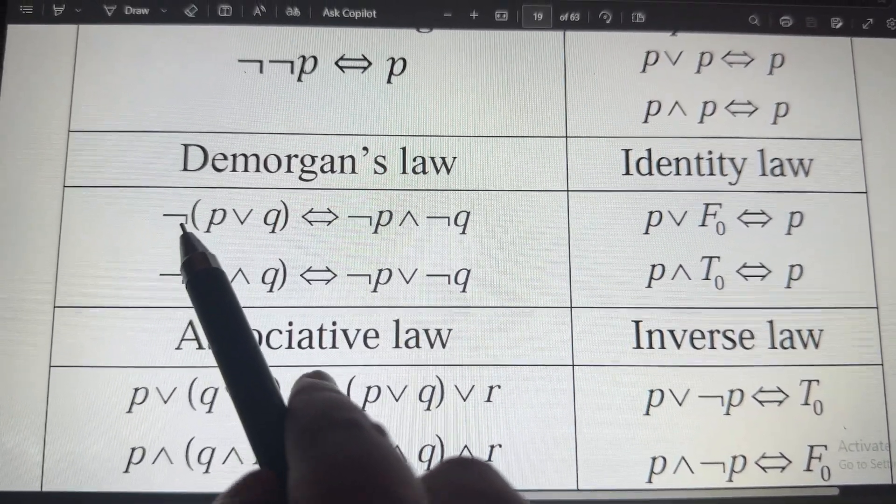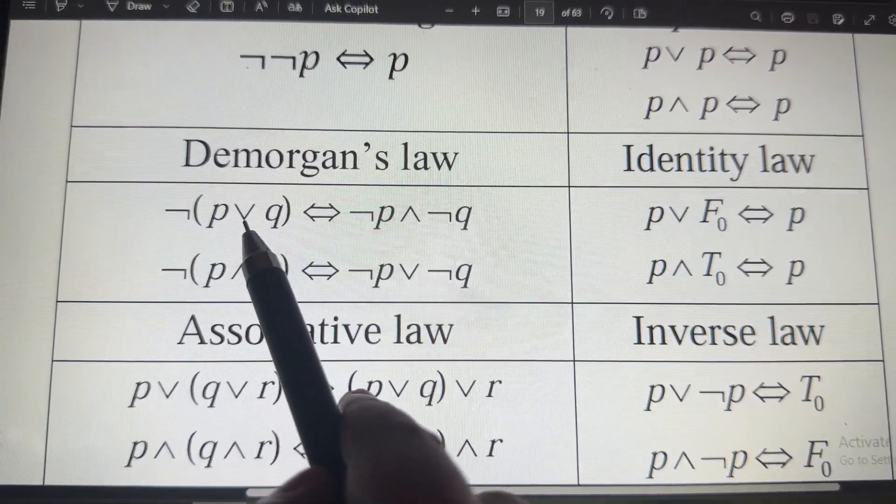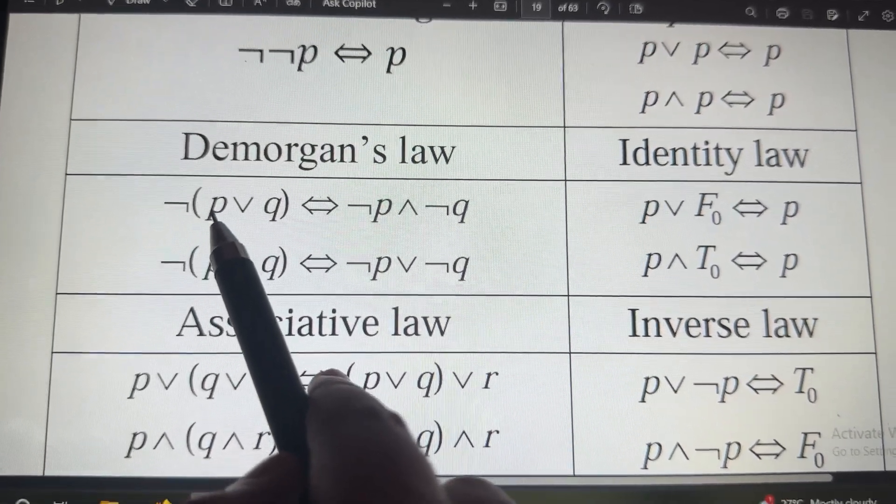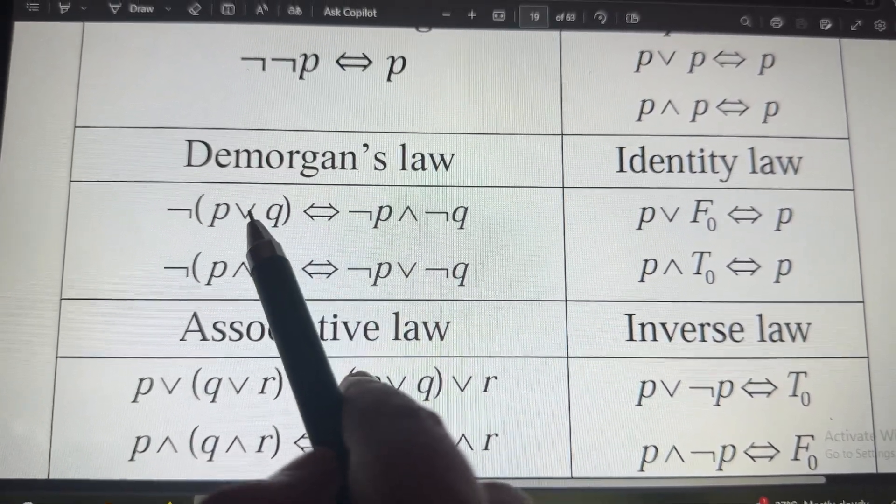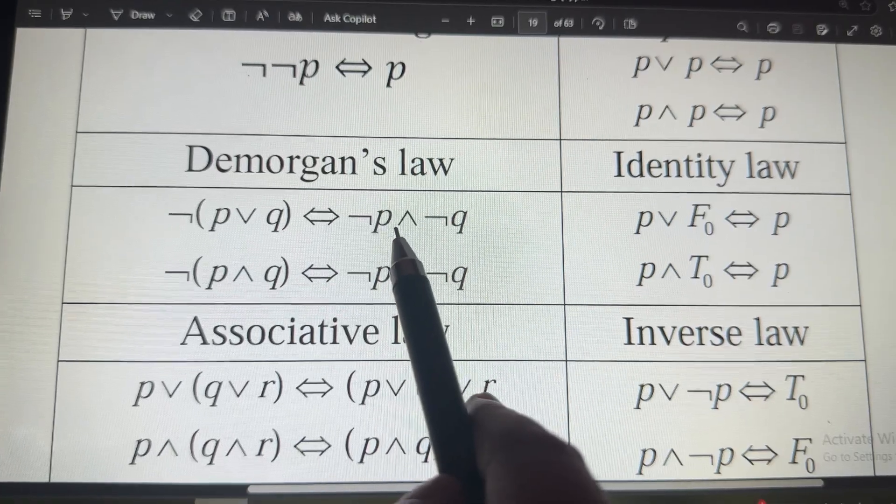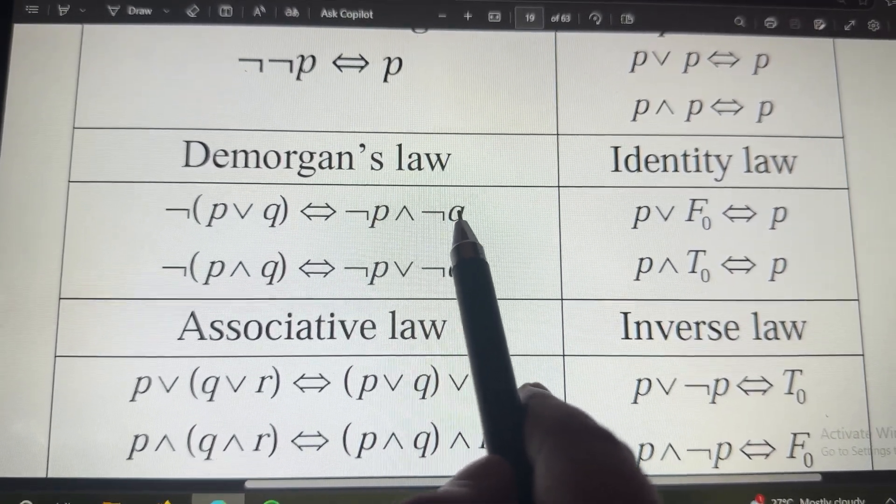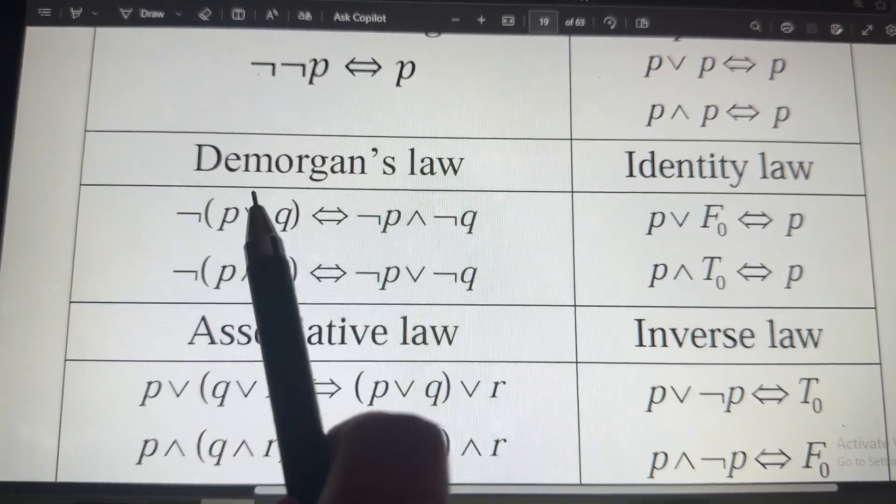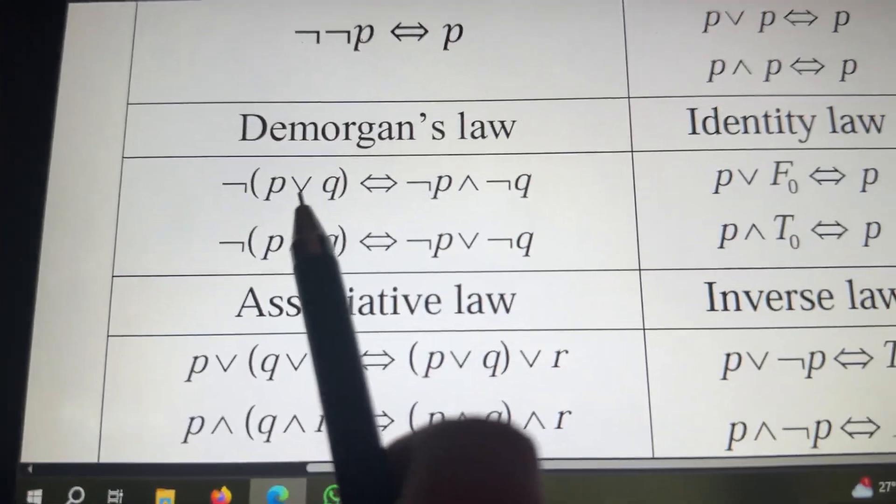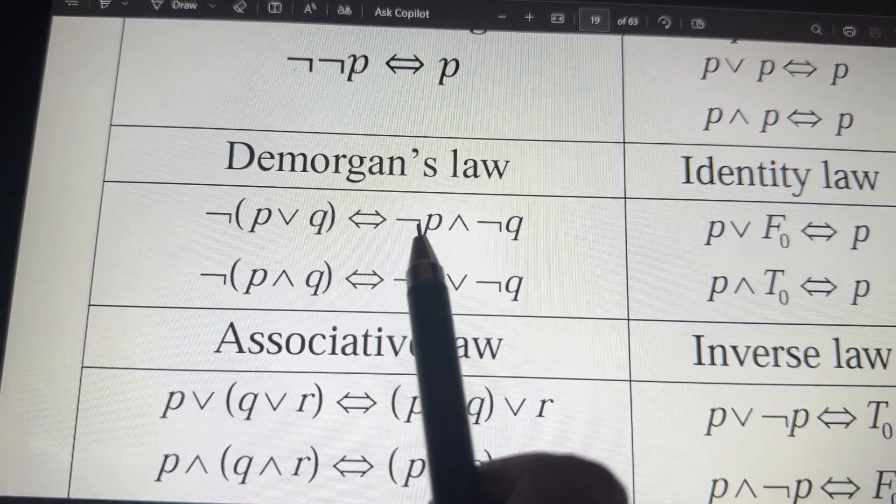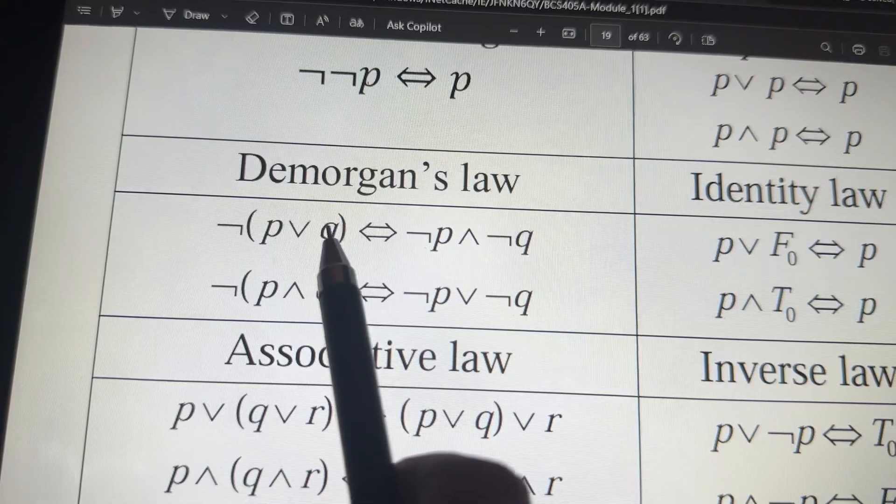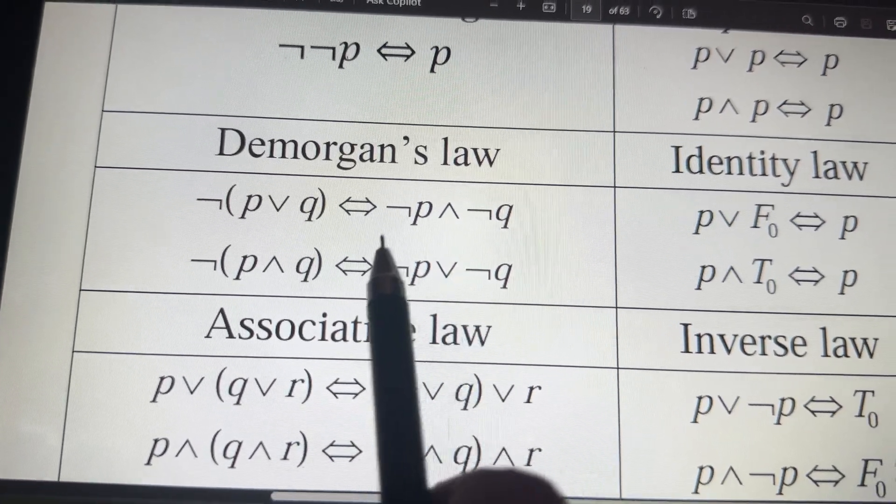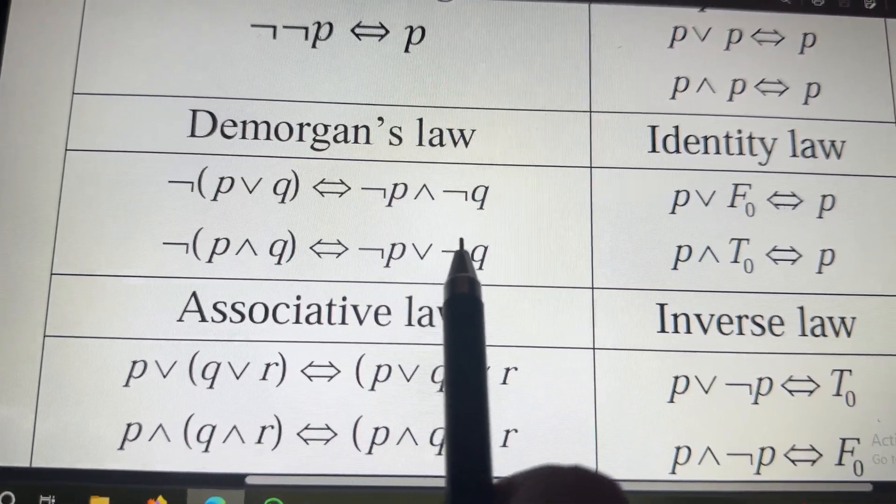See, remember NOT of P or Q is nothing but NOT of P as it is. So, in place of this, you will write AND NOT of Q. In simple, what answer you will get is, see, you have to write NOT in both the sides and change this symbol. OR will become AND. Here, AND will become OR.